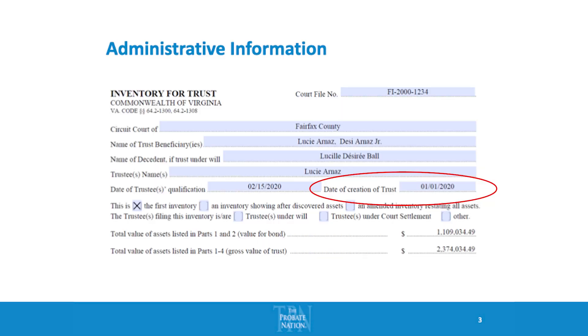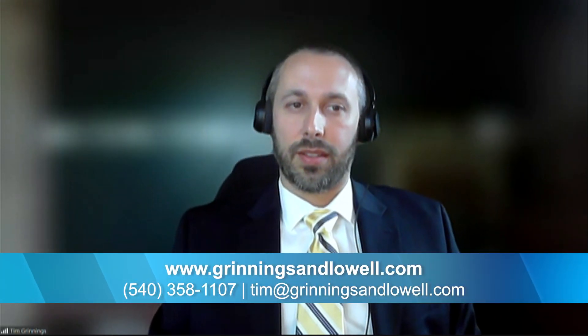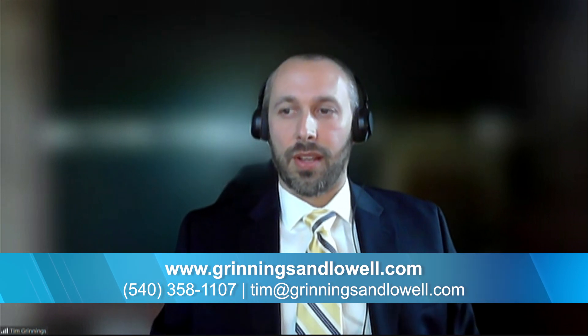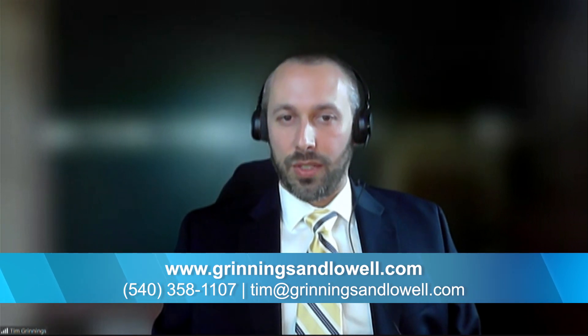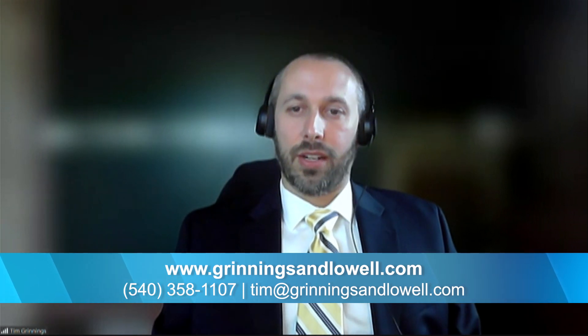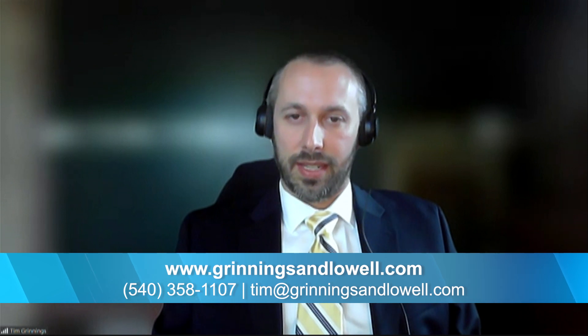One thing that can be a little confusing is the question about the date the trust was created. Is it the date of the will, the date of death, or the date of qualification? I usually put the date of death, because the trust is formed in somebody's will and then goes into effect when that person dies. That's typically the date I put there, and that's certainly what we suggest.